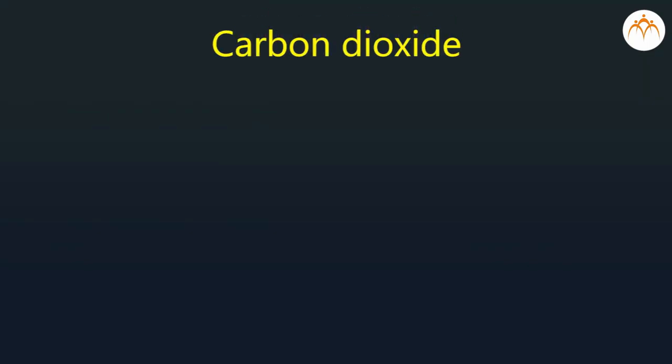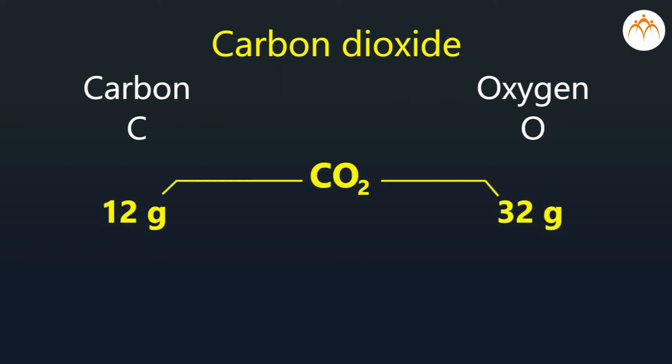Suppose we want to prepare carbon dioxide from carbon and oxygen. Then, we will have to take 12 gram of carbon and 32 gram of oxygen. We cannot add two elements in any proportion we want. The proportion by weight of carbon to oxygen while making carbon dioxide should always be 3 is to 8.